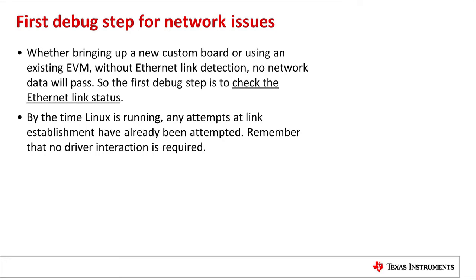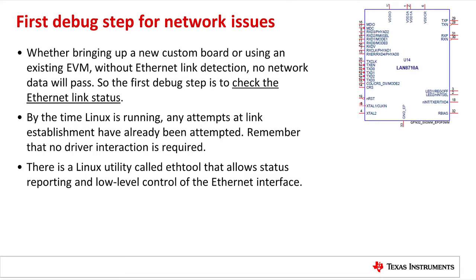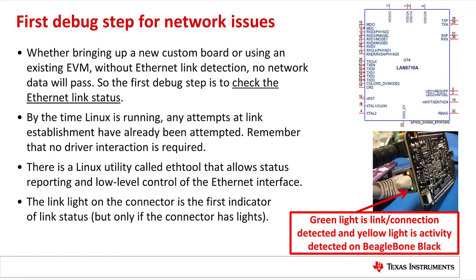By the time Linux is running, any attempts at link establishment have already been attempted — remember, no driver interaction is required. In Linux there is a utility called Eth Tool that allows status reporting and low-level control of the Ethernet interface. In addition to Eth Tool, there is a link light on the connector, which is also a first indicator of link status, but only if the connector has lights that are hooked up. The green light on the BeagleBone Black indicates link detected and there is also an activity light. If this light is green or flashing, that means you have a valid Ethernet link detected, which is what you want to see.